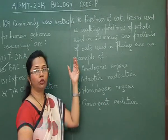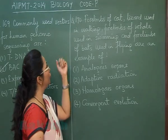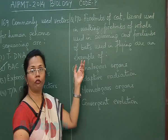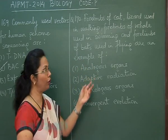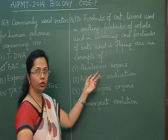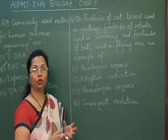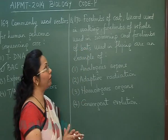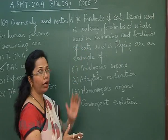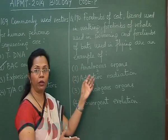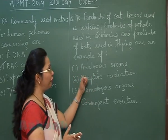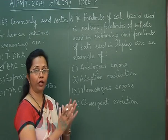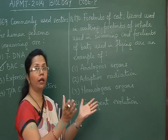Question 170: Forelimbs of cat and lizard used in walking, forelimbs of whale used in swimming, and forelimbs of bats used in flying — these are given as an example. Analogous organs are those which have the same function but different origin. Here all of them are vertebrates with forelimbs having the same origin, so it cannot be analogy. Adaptive radiation applies to a related group of species that radiated from a single point.